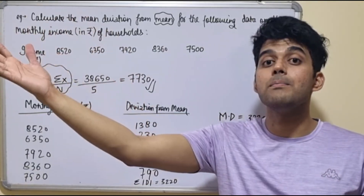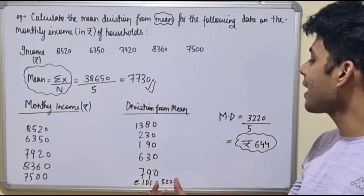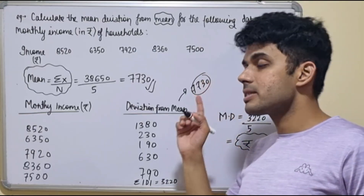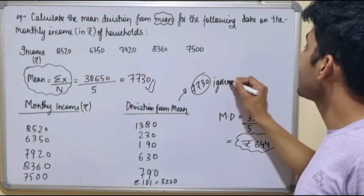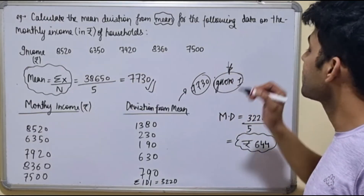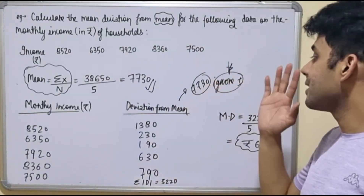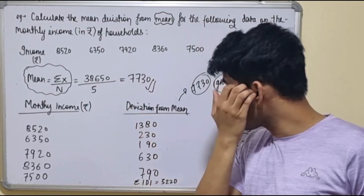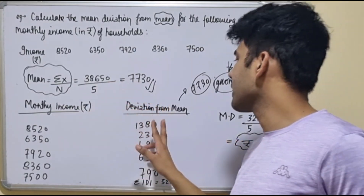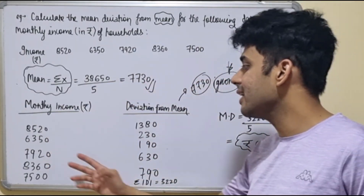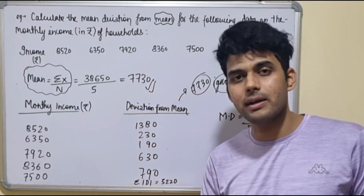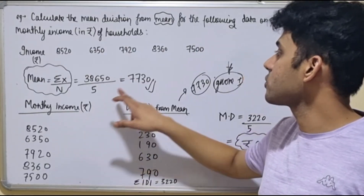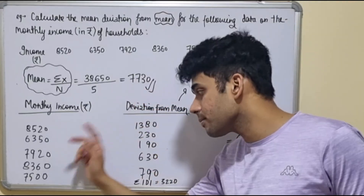To find deviation, subtract the mean from each data value and ignore the plus and minus signs — only the magnitude matters. So: 8520 minus 7730 gives 790; 6350 minus 7730 gives 1380; 7920 minus 7730 gives 190. Similarly, you find the deviation for each value from the mean of 7730, recording all results in the |D| column.